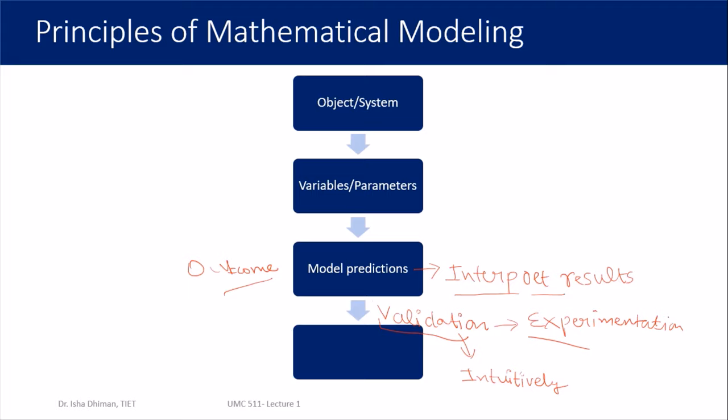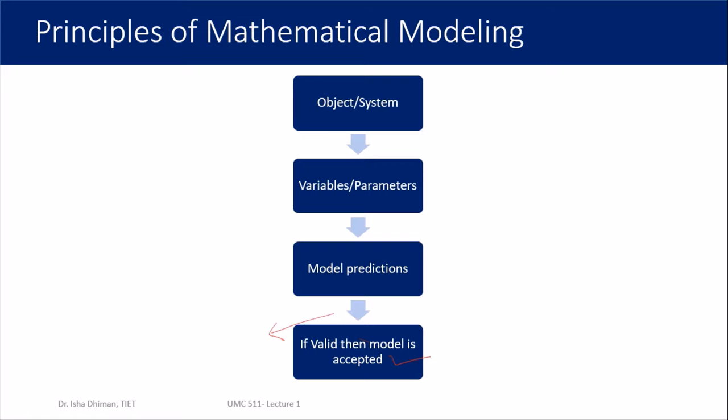After the validation step there are two possibilities: if the model is valid, we accept it. If it is not valid, we have to repeat the steps — going back to either the step where we defined the assumptions and parameters, or in some cases all the way back to the first step to redefine the purpose of modeling. We identify the loophole and complete the process. That covers all the principles of mathematical modeling.